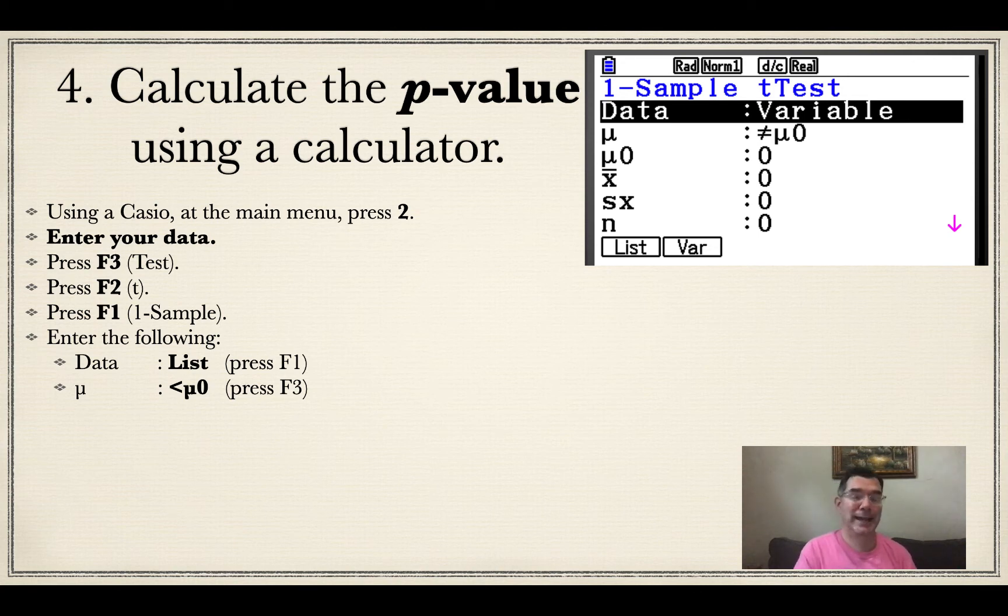My mu is going to be less than mu zero because I am trying to see whether the average wait time has actually gone down, meaning that the new average is lower than the old average. Mu zero is seven, that's what the average was before. My list of data is in list one. I actually need to tell my calculator which list has the data in it.